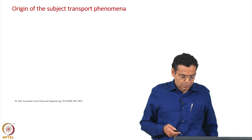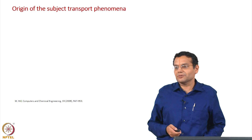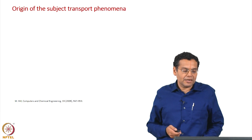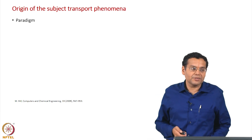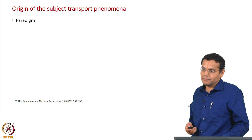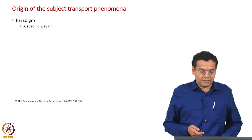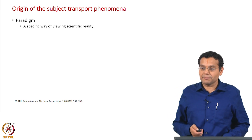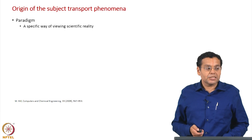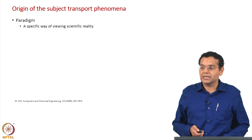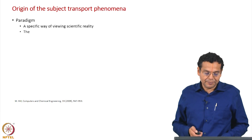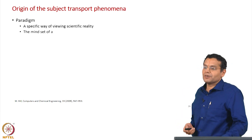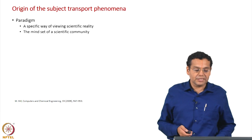To know about the origin of the subject transfer phenomena, we will have to dig a little bit into the history of chemical engineering, and to do that we should understand the term 'paradigm'. Paradigm, by definition, is a specific way of viewing scientific reality — the way in which you look at a scientific reality. Another way of defining it is: the mindset of a scientific community.